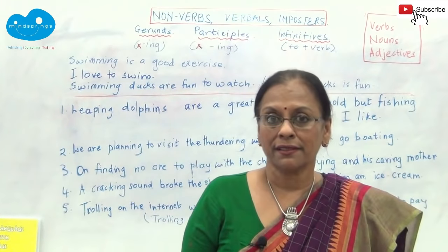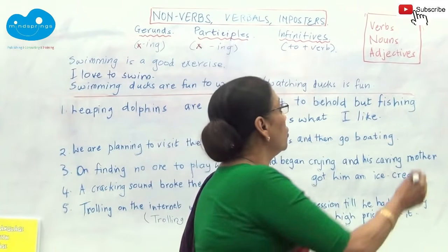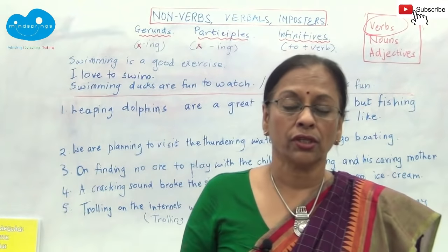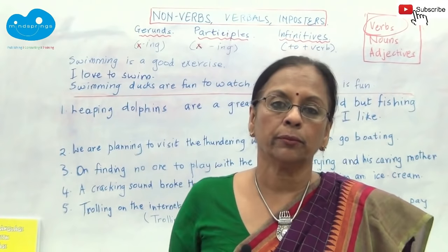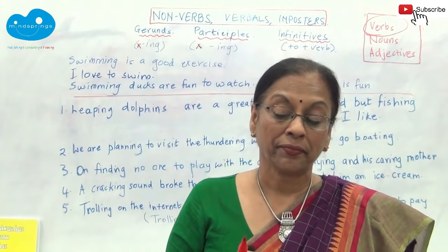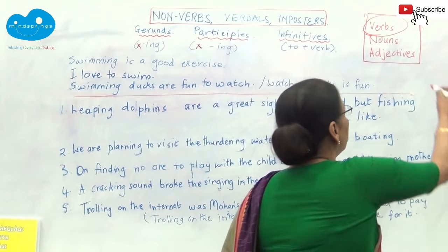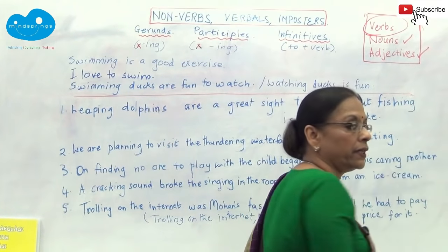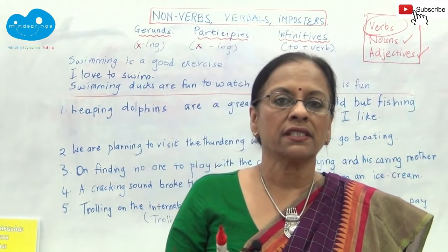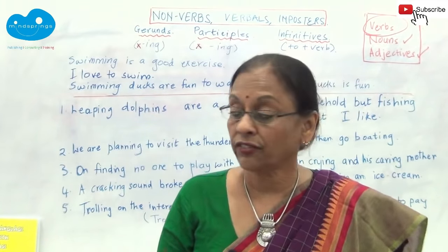These verbals are imposters. Why? Because they all look like verbs. The minute you see them, you call them a verb — but they are not verbs, they are something else. If they are not verbs, what can they be? They have to either be nouns or they have to be adjectives. That is the first thing to remember: verbals are not verbs. They are either nouns or adjectives.